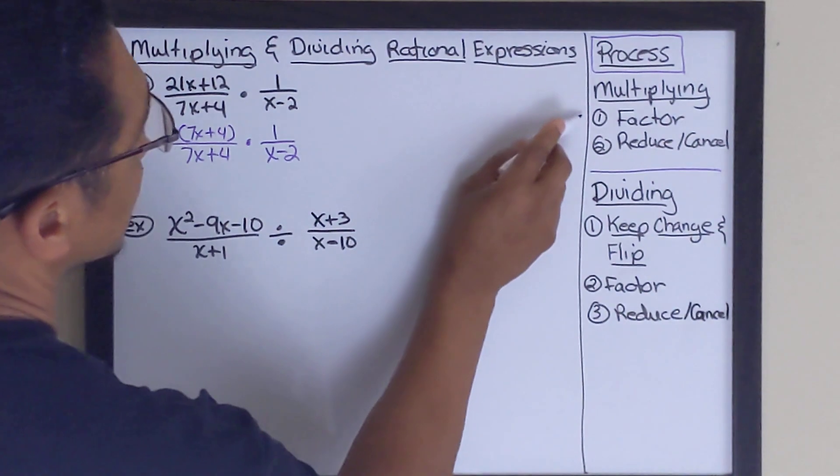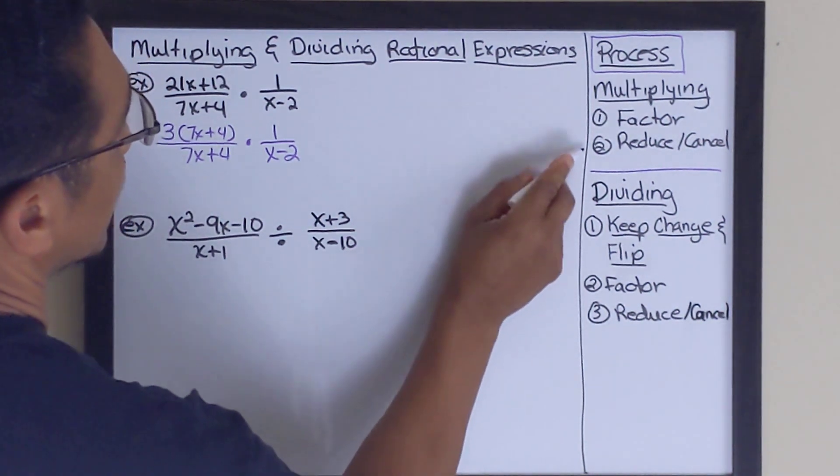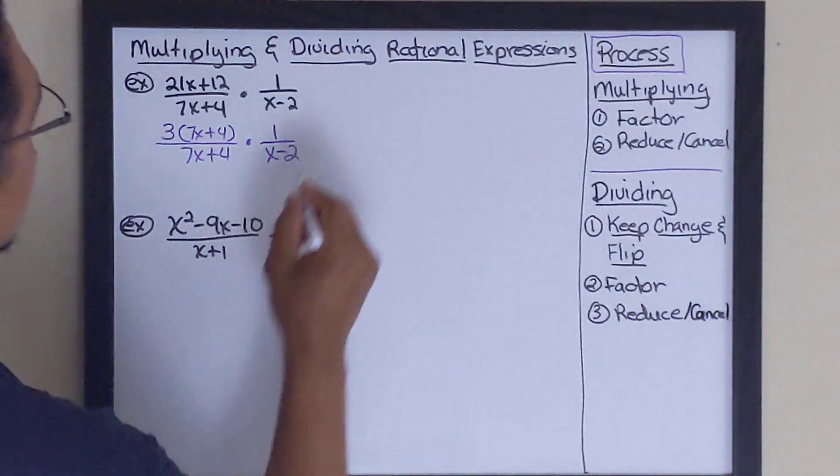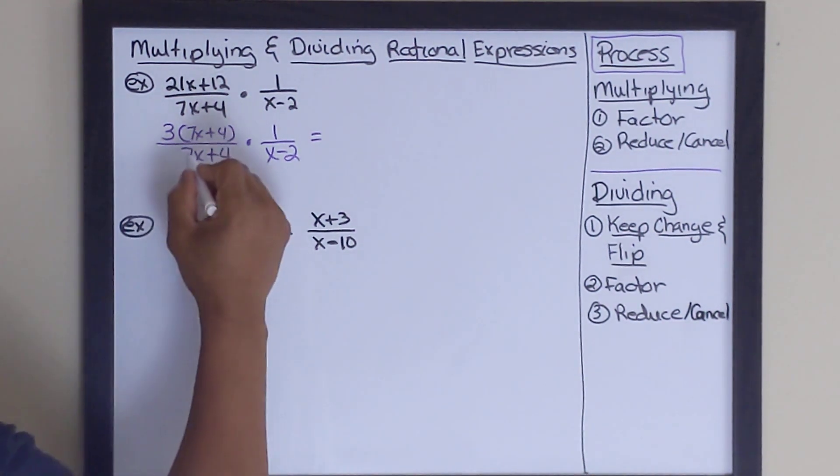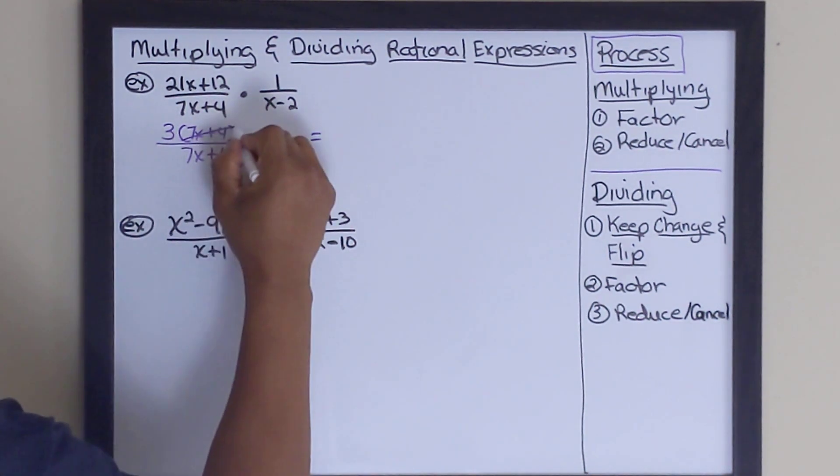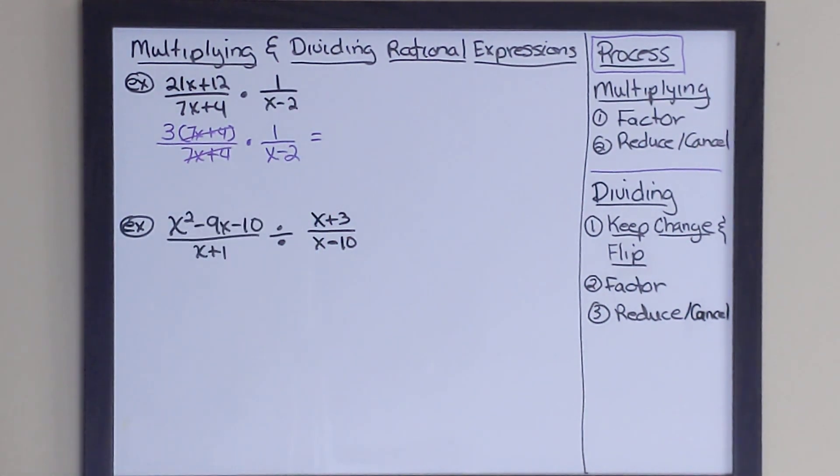Now at this point, we've done the factoring portion of our multiplication. And now we're going to reduce and cancel. So all we've got to do is look to see if there's anything in the denominator or in the numerator that can be canceled. And there is. We've got a 7x plus 4 in the numerator. And we've got a 7x plus 4 in the denominator.